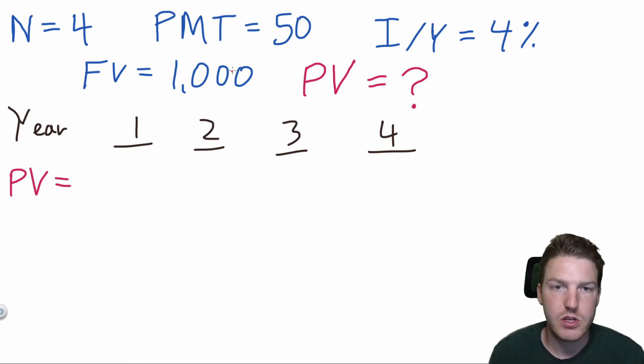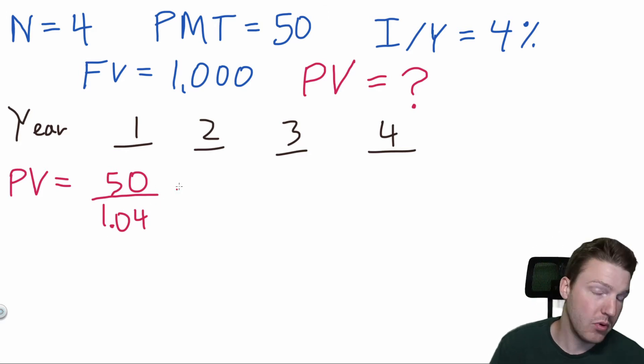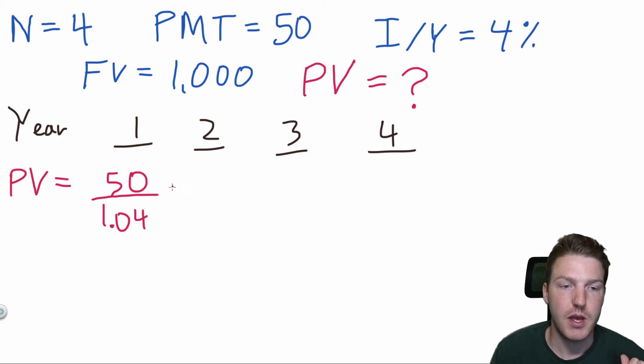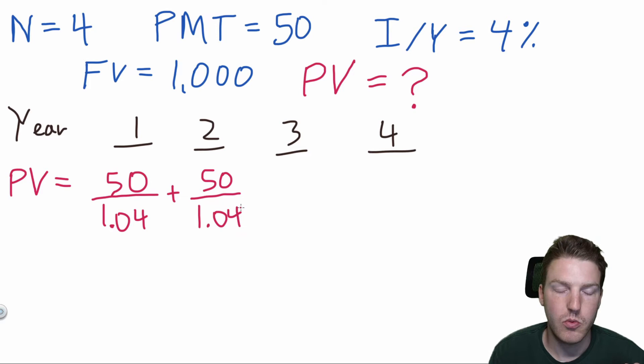Okay. So the first year we're just going to receive the payment, which is $50, but then we have to discount it back one year at a rate of 4%. So we would actually take 1.04 and that would give us the total value in present value of the cash flow from that year. Then we're going to do year two, which again in year two, we're going to get the payment, which is $50. And this time we're going to have to take it to 1.04, so one plus 4% to the power of two, because we're discounting it back two years.